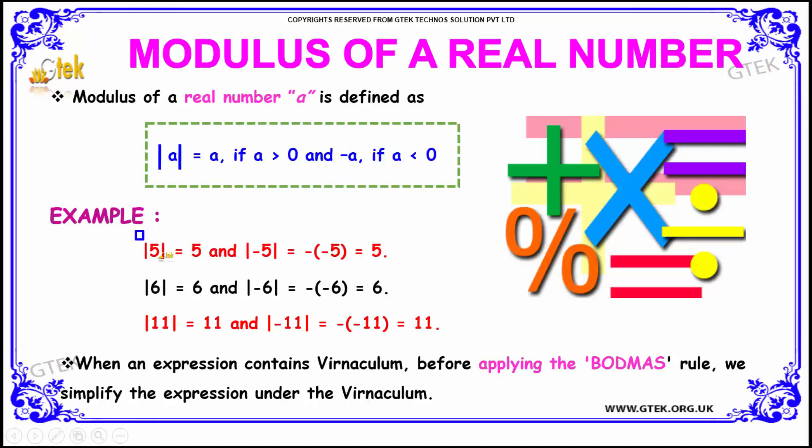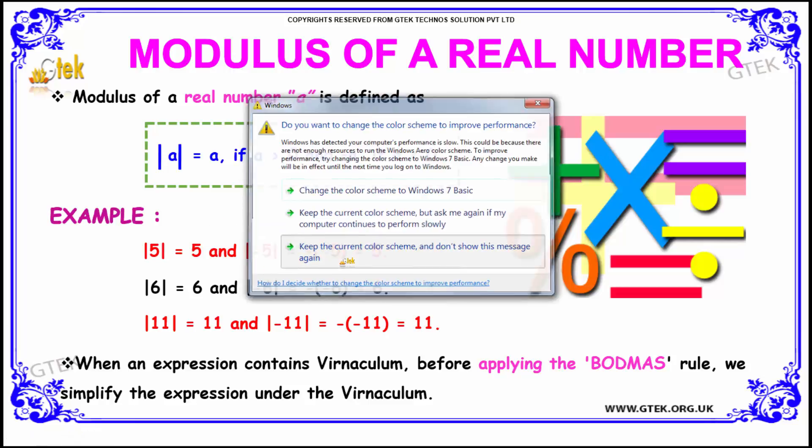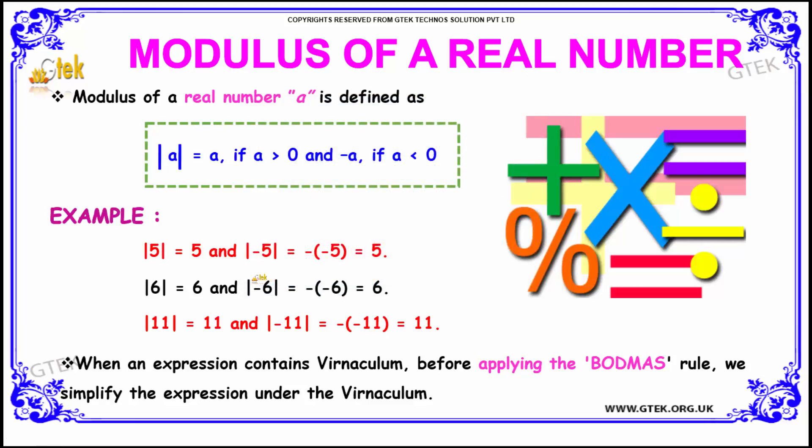For example, the modulus of 5 is equal to 5 and the modulus of -5 is equal to -(-5) which is also 5.